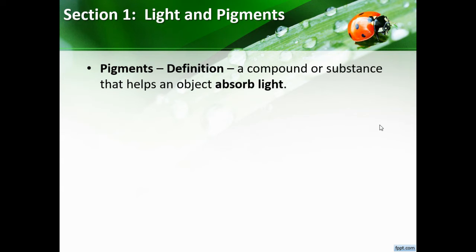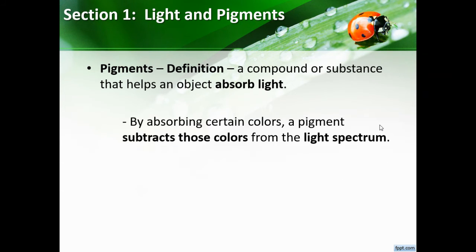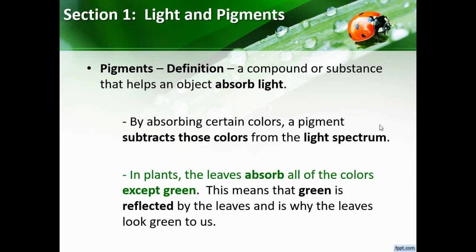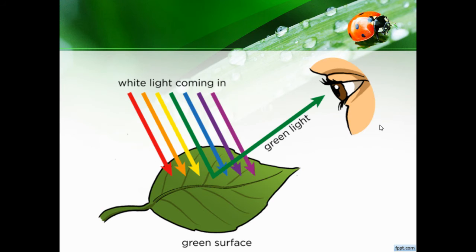Pigments are compounds or substances that help an object absorb light. By absorbing certain colors, a pigment subtracts those colors from the light spectrum. In plants, the leaves absorb all colors except green, which is why leaves look green to us — green is reflected while all other colors are absorbed.